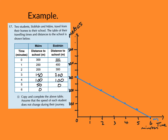I'll label that line M for Myra. Now plotting Siobhan in green: at zero minutes she's at 500. At one minute: 400. At two minutes: 300. At three minutes: 200. At four minutes: 100 — that's where the two lines cross. At five minutes: zero. I get out my ruler and draw a line through all those points.